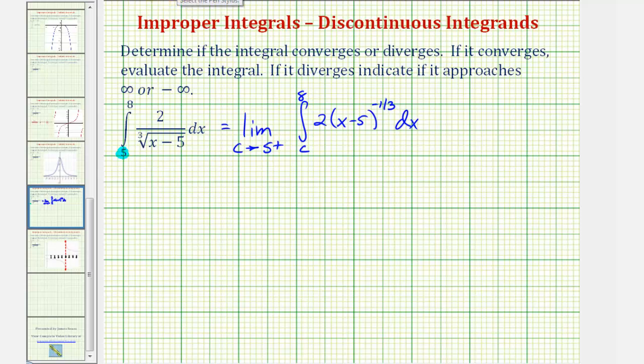And now we'll integrate. We might be thinking u substitution here, where we let u equal the quantity x minus five. Well, if we do this, notice how du is just equal to dx. So we can go ahead and just add one to the exponent and then divide by the new exponent.